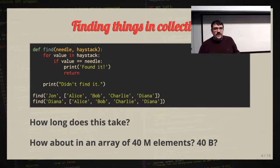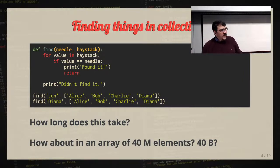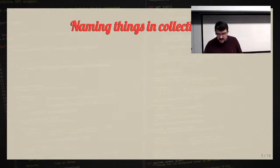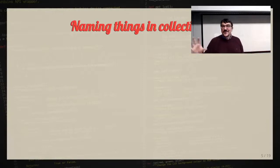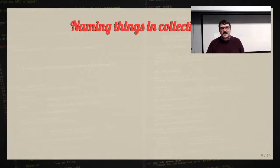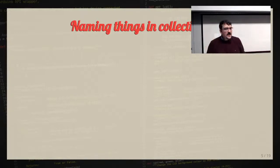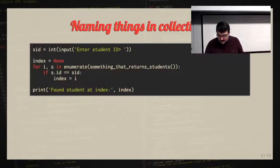So iterating through a collection one element at a time is problematic for large data. There's another issue: it's been said there are only two hard problems in computer science — cache invalidation and naming things. There's more wisdom to that than you might appreciate yet. Naming things is hard both in the sense of how a person applies a label to something, and how you name objects by their location or their contents.